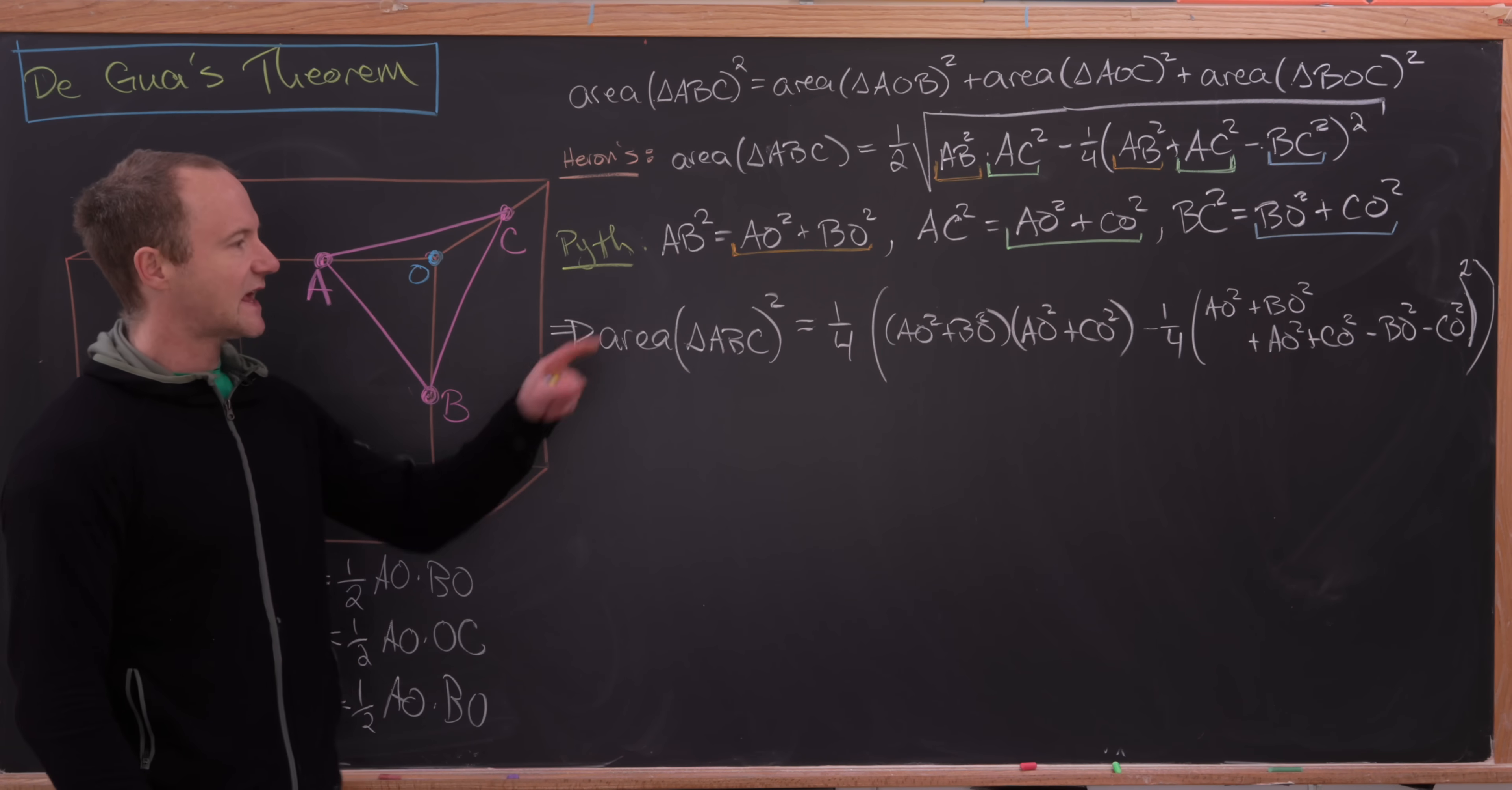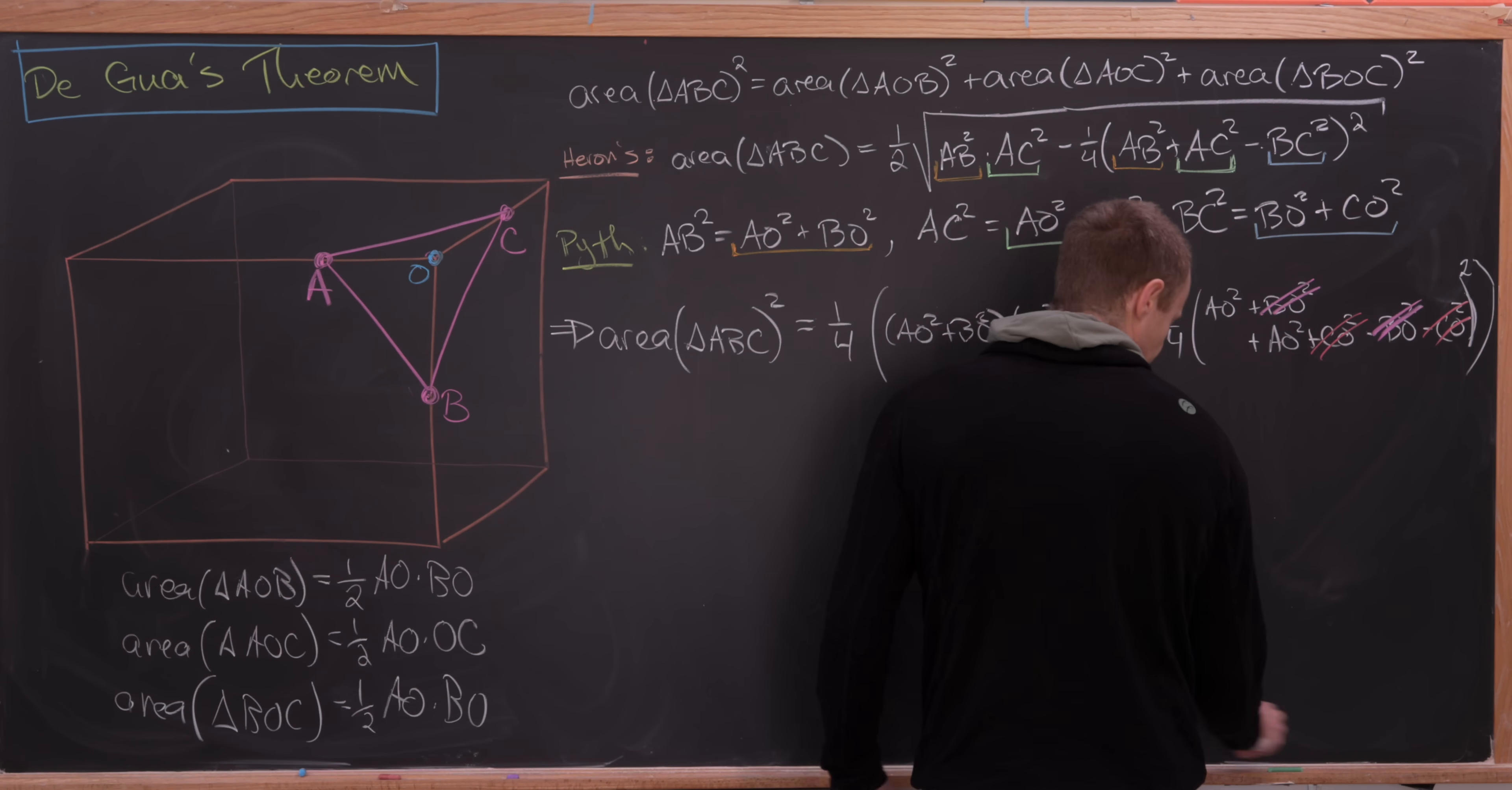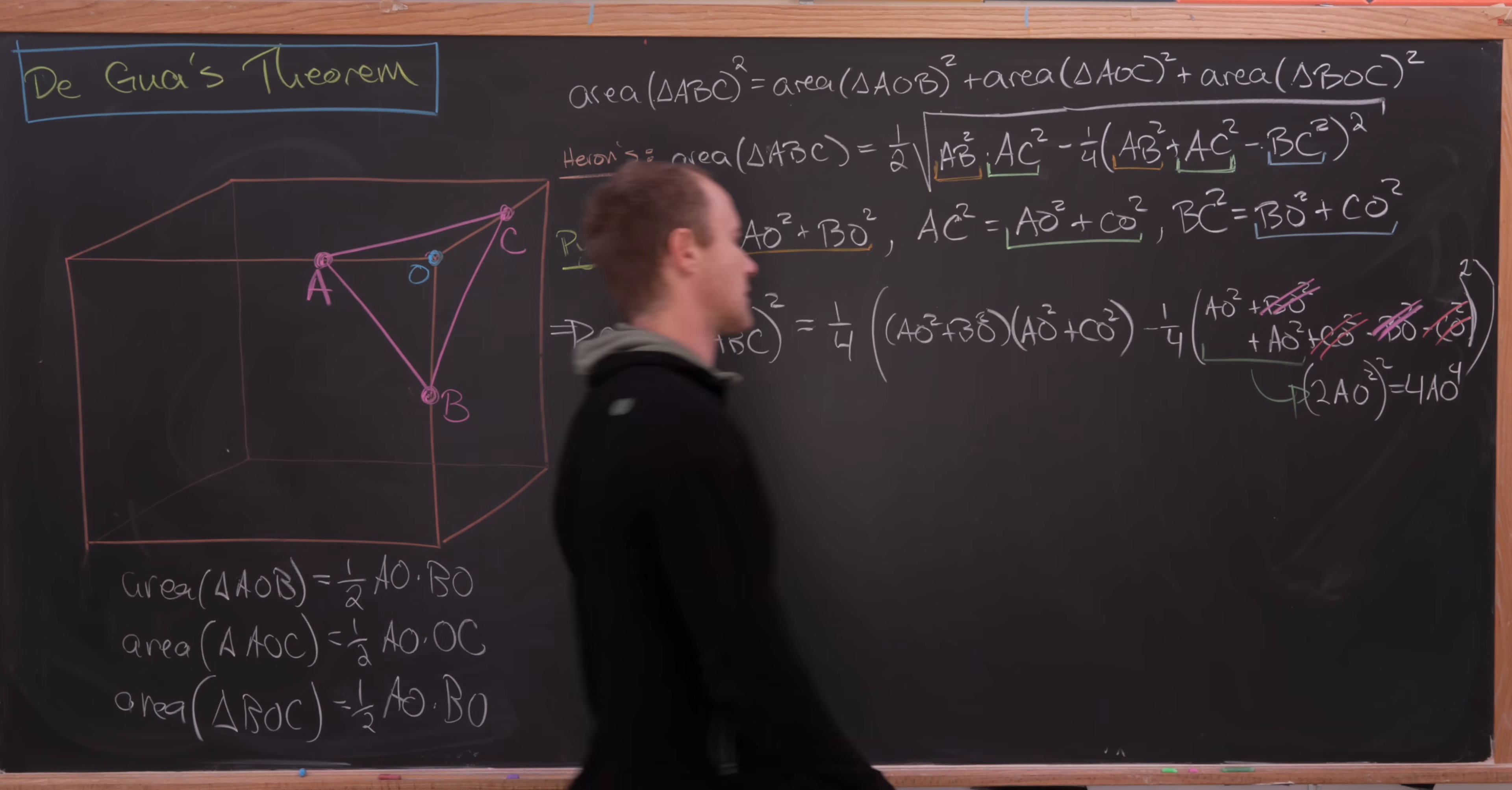But notice we get cancellation in that rightmost term. So observe that this BO squared cancels this BO squared because they have equal but opposite coefficients. Same thing with this CO squared and this CO squared. But then these two objects add up to, let's see, two times AO squared. Okay, nice. But then notice that that's in something squared, so that's going to give us four AO to the fourth power.